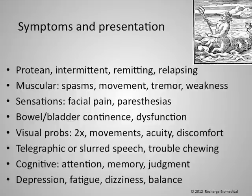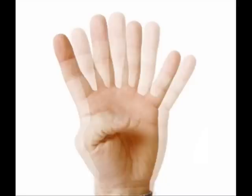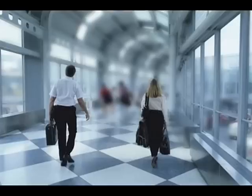Visual problems are not uncommon. Some of them are related to optic neuritis, which is inflammation of the optic nerve. You can get double vision or diplopia, problems with the eyes moving in different directions, or unintentional movements of the eyes known as nystagmus. There are also problems with visual acuity and discomfort or pain.